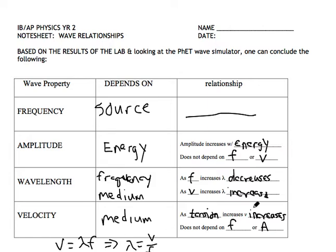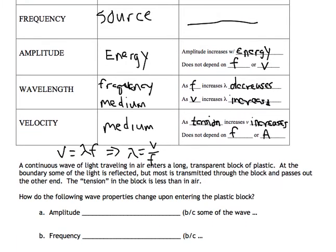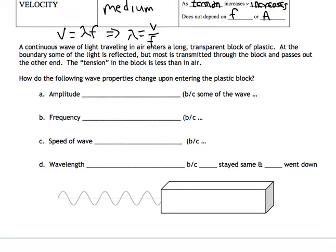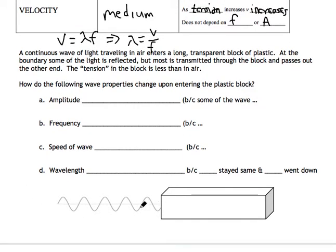So let's look at an example here, just to make sure that this is making sense. So we have a continuous wave being produced. And it is light. Looking at it as a transverse wave of light. And it enters a transparent block of plastic. And at the boundary, some of the light is reflected, as it always is, unless you have some special optical films, lenses, etc. But we'll assume some is reflected, most is transmitted, and it passes out the other end.